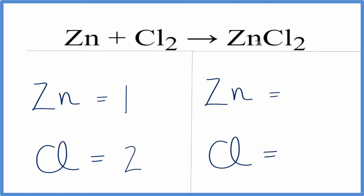Over on the product side, we have one zinc and we have two chlorine atoms. When you look at this, we have one zinc on each side, two chlorines on each side — this equation is already balanced. And therefore, we obey the law of conservation of mass.